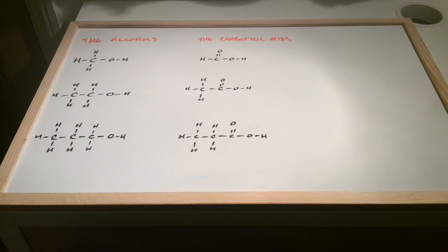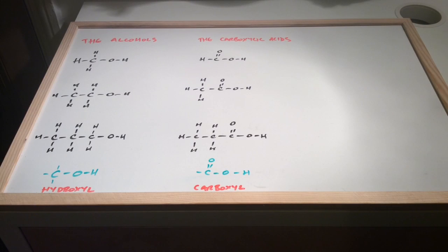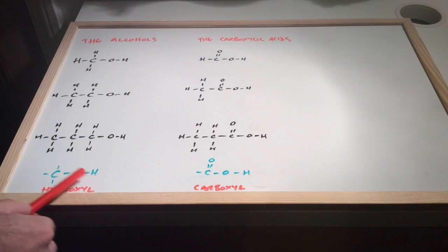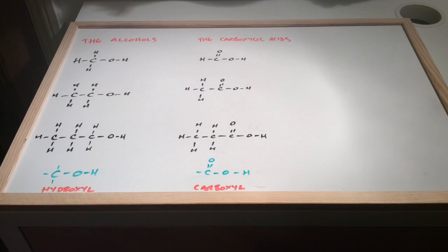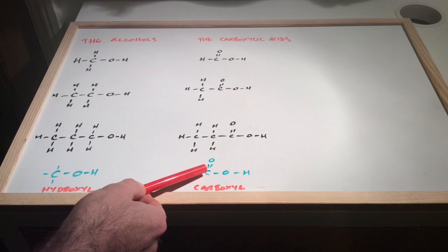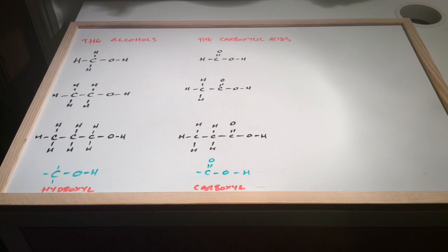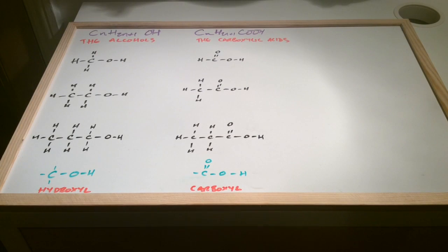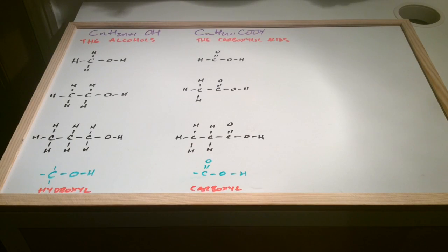Can you work out what the functional groups are and what the general formula is? The functional group for the alcohols is a carbon with an OH group directly attached — that's known as a hydroxyl group. The carboxylic acid functional group is a C double bond O with a hydroxyl group directly attached, and that's known as a carboxyl group, hence the name carboxylic acid. The general formula for the alcohols, written in purple, is CnH2n+1OH, showing the functional group in the general formula.